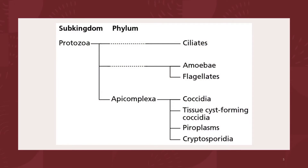Classes of Protozoa are categorized by cell architecture, motility, and host. Within the kingdom Protista are several phyla containing flagellated, amoeboid, apicomplexan, and ciliated protozoans. In veterinary parasitology, the most important phyla are Sarcomastigophora, which contains amoebae and flagellates; Ciliophora, which contains ciliates; and Apicomplexa, which contains the coccidia, tissue cyst-forming coccidia, piroplasms, and cryptosporidia.